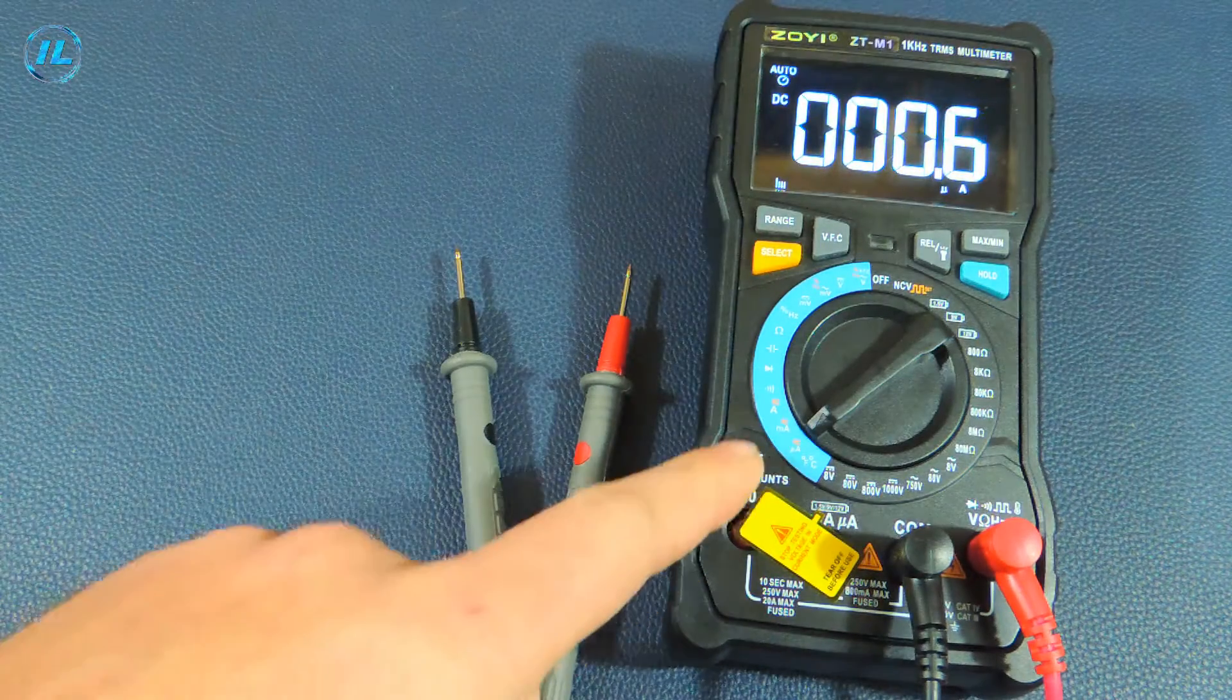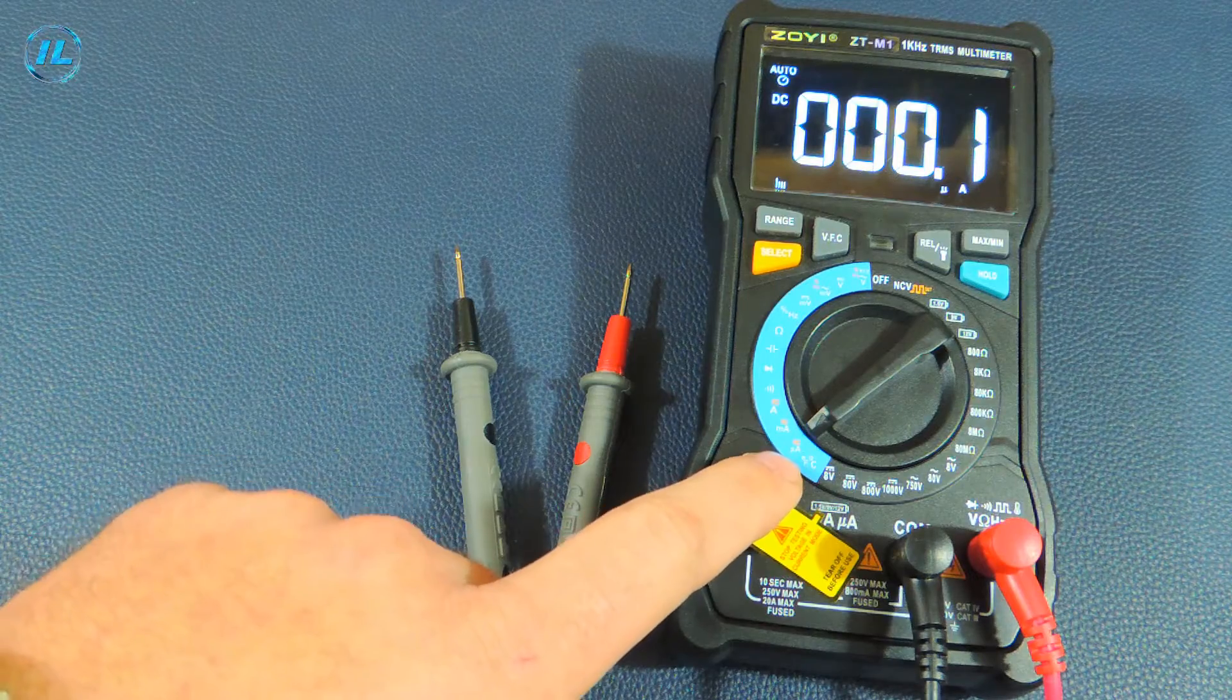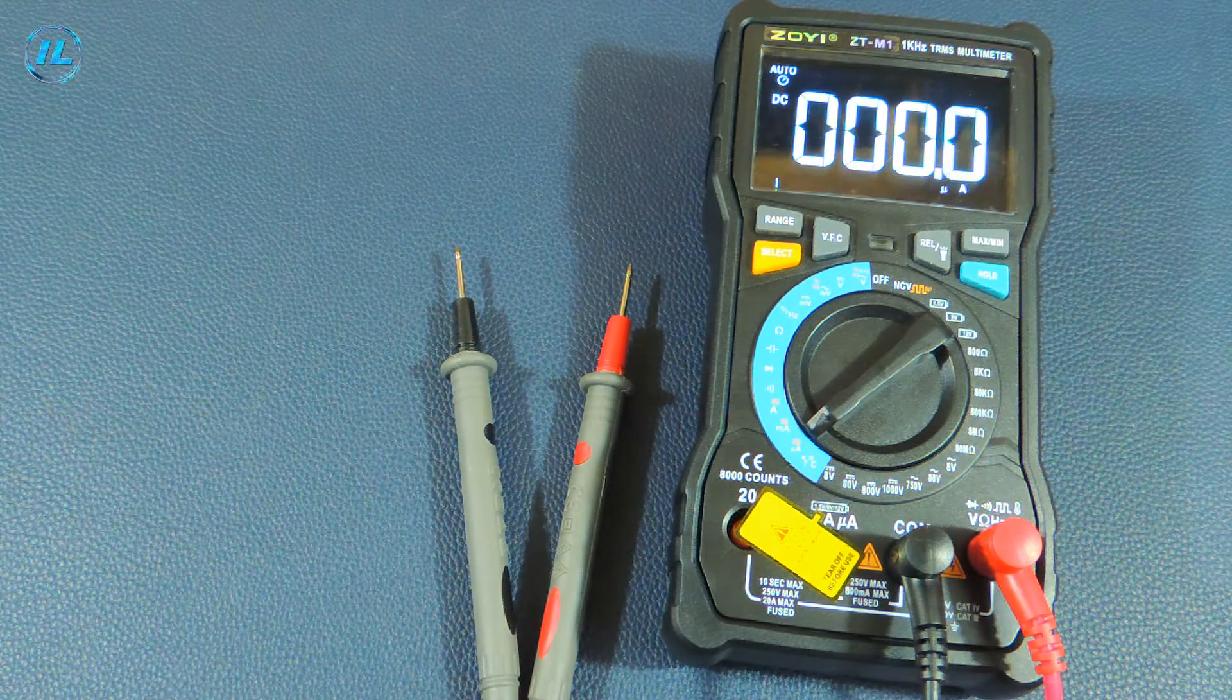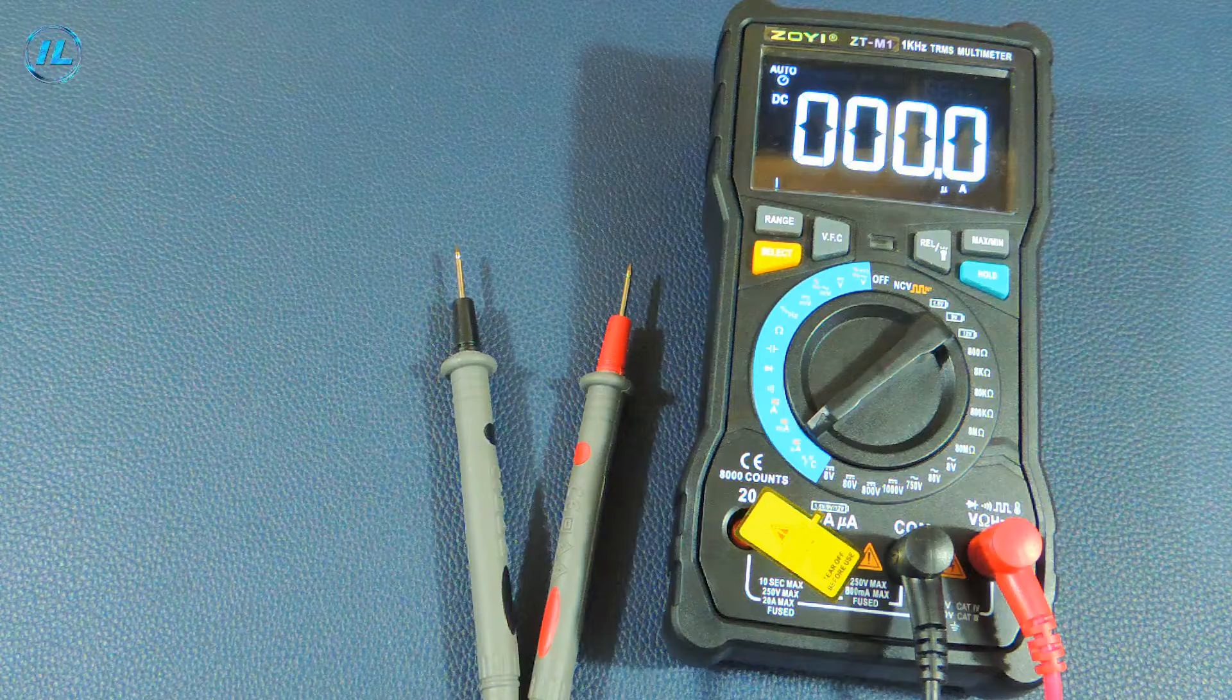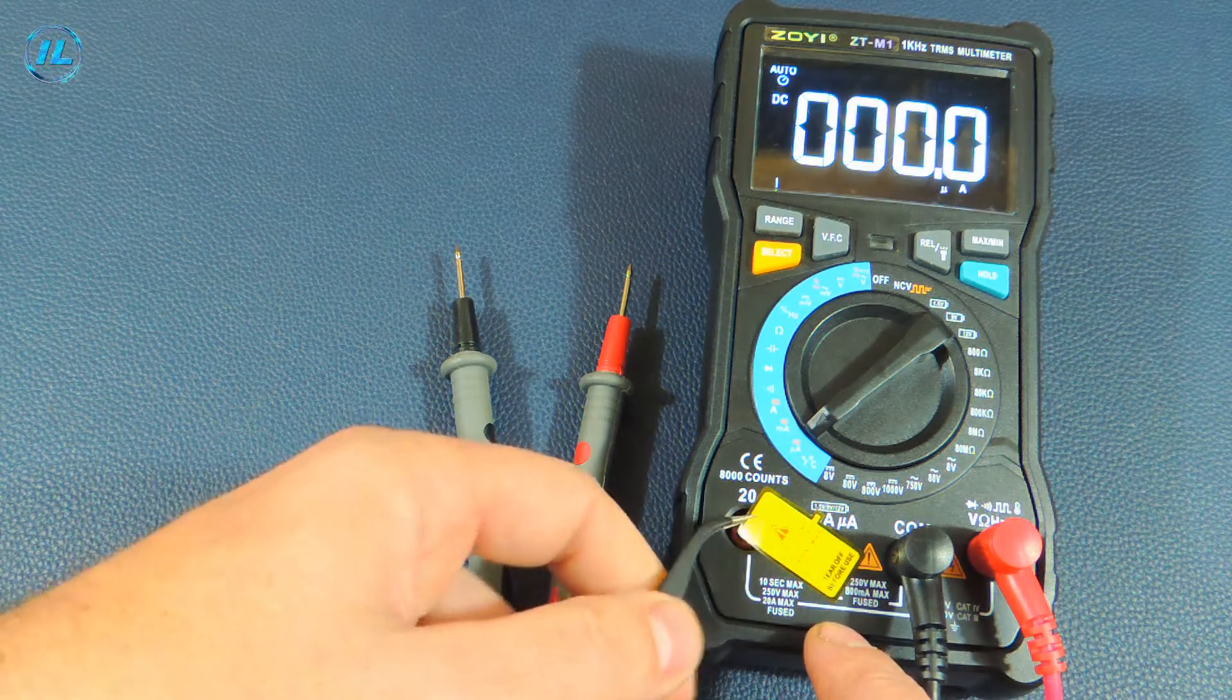The next three points are the measurement of the current strength. The first point is small currents, micro amperes. The last point is high currents up to 20 amperes. To measure the current strength, the red probe must be moved to the appropriate socket.